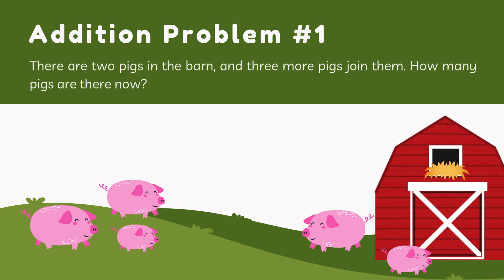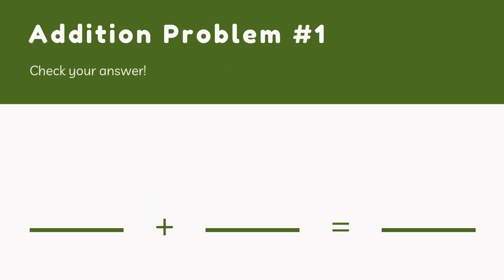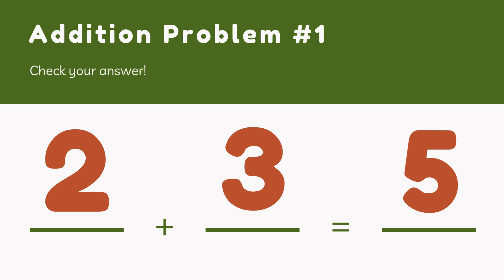Let's see if you can solve this question. There are two pigs in the barn and three more pigs join them. How many pigs are there now? Look at the picture carefully. Your answer is right — there are two and three more, so the answer will be five pigs. Good job, children.